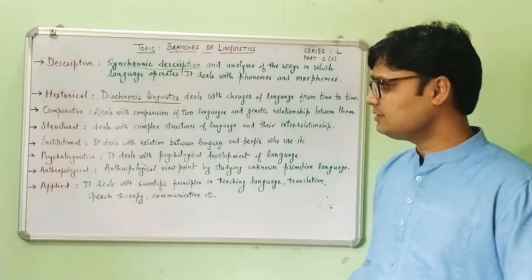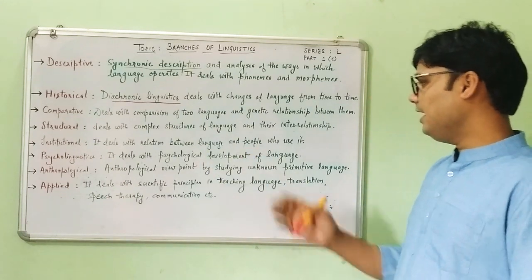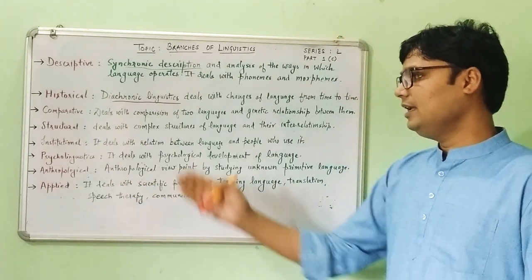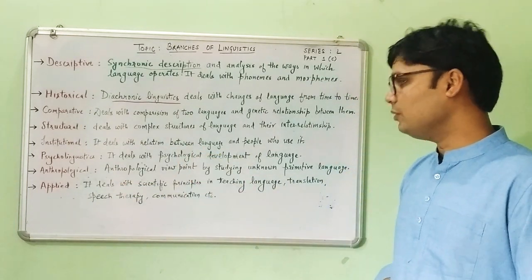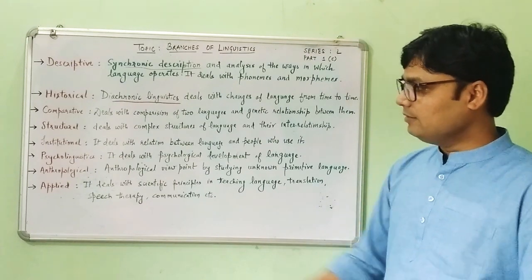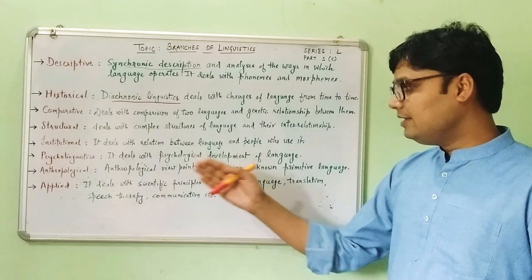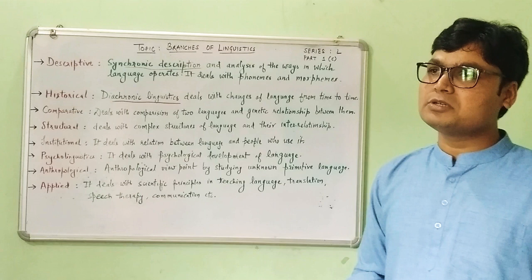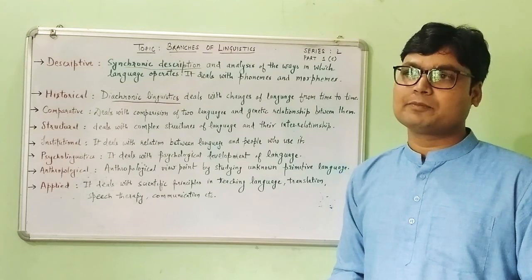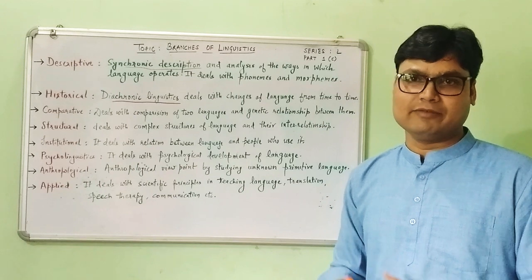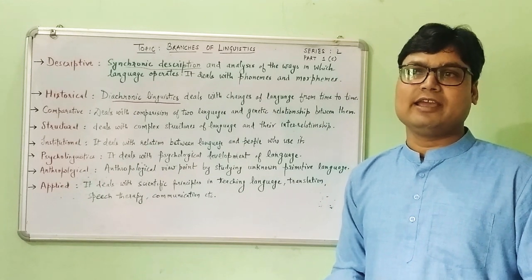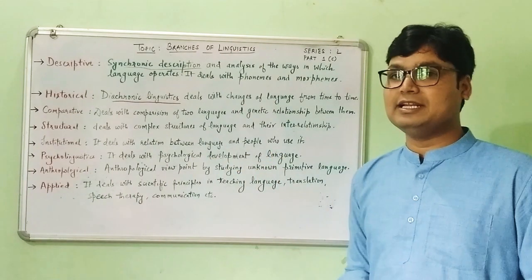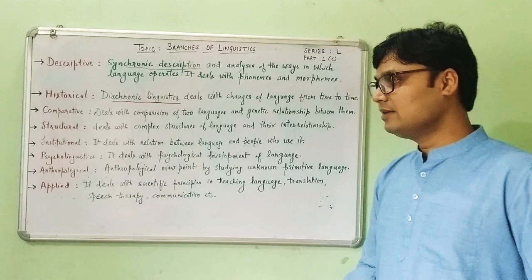Structural linguistics deals with the complex structures of language and their interrelationship. Another branch is institutional linguistics, which deals with the relationship between language and the people who use it. Next is psycholinguistics, which deals with the psychological development of a language. Scholars like Chomsky and Vygotsky have studied intensely how language develops psychologically, and the branch in which we study language psychologically is called psycholinguistics.